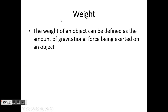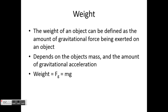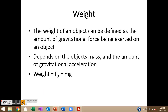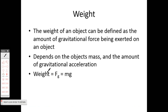A couple things to chat about here today that lead right into potential and kinetic energy. The weight of an object is simply the amount of gravitational force being exerted on it. This depends on an object's mass and also on the amount of gravitational acceleration. Mass is the amount of matter, and gravitational acceleration is essentially how hard it's being pulled by the earth — or if it's on the moon or Mars, how hard that's pulling down on it.